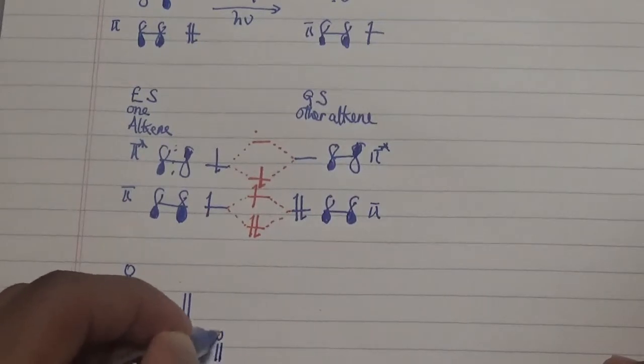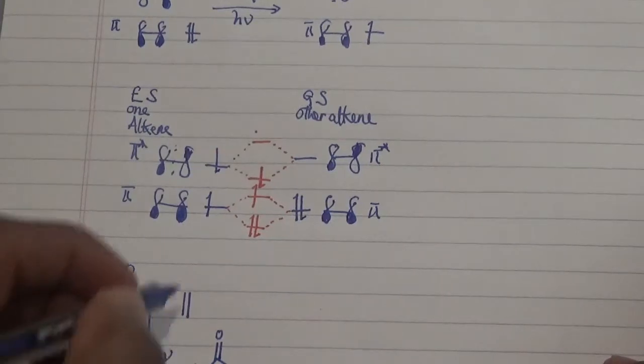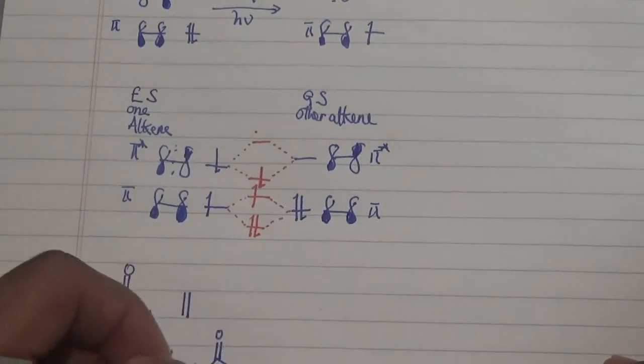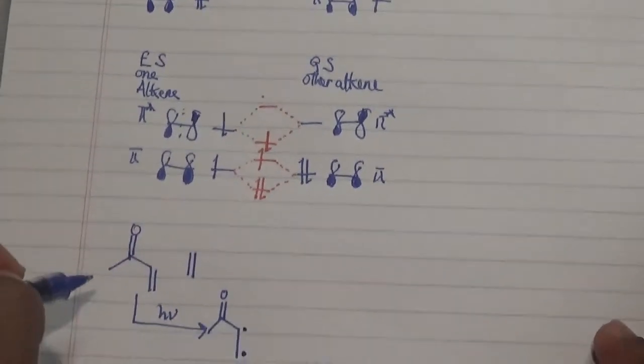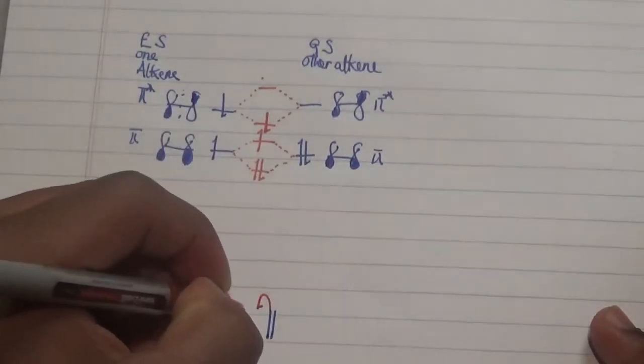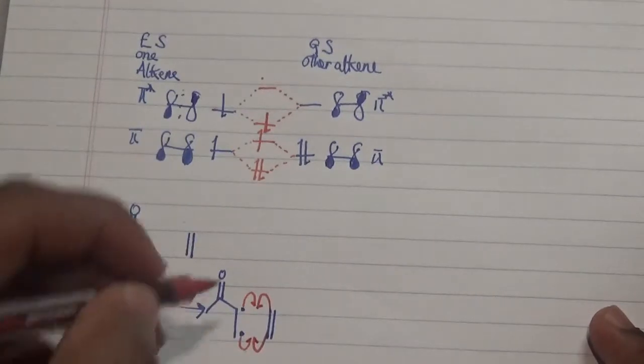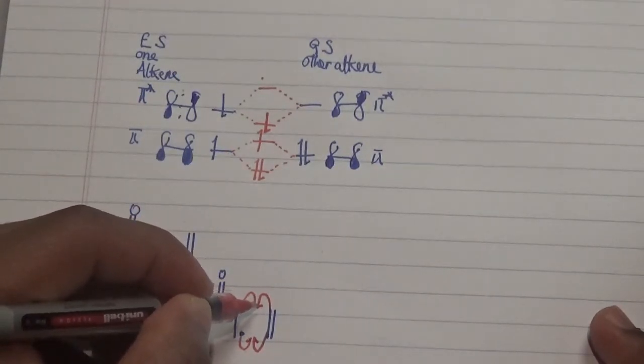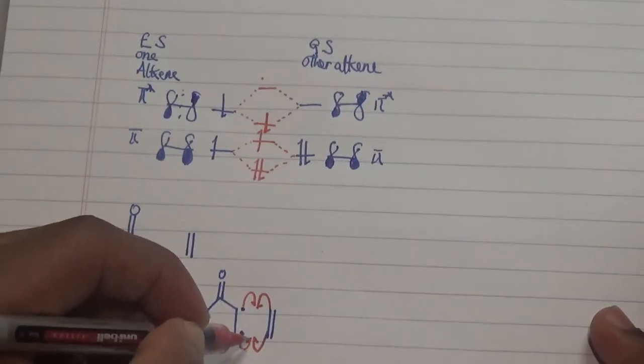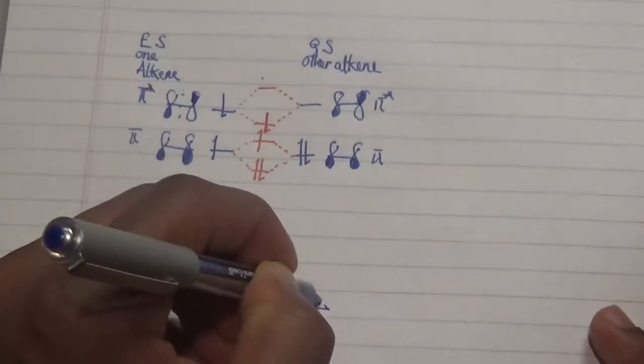When this is placed in this particular compound, what we get is the overlap of orbitals or electrons over here, where one of these electrons pairs with this electron and this other electron pairs with this electron. Take note that I didn't use a double-headed arrow, I just used a single-headed arrow because we're dealing with single electrons.